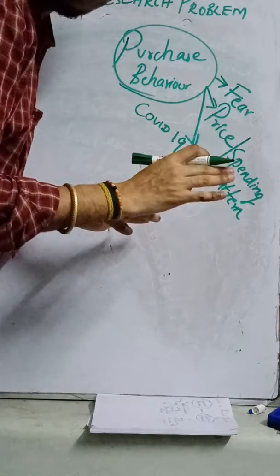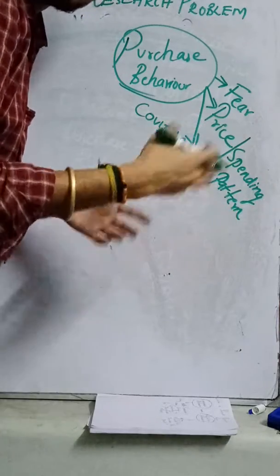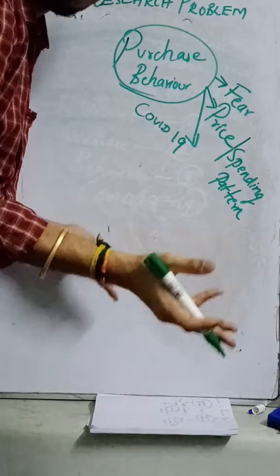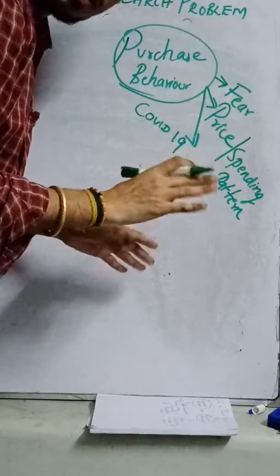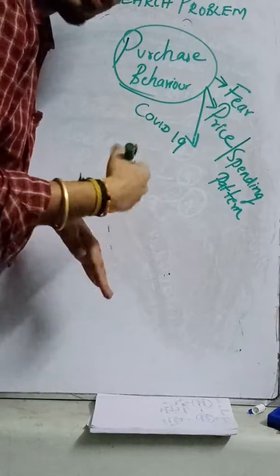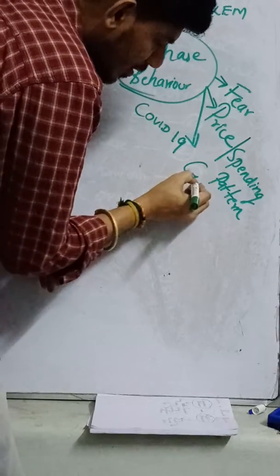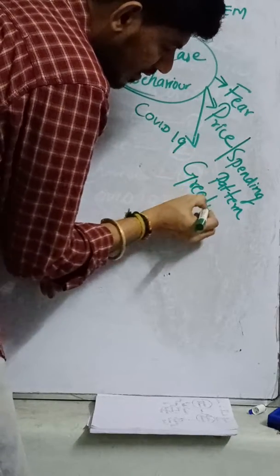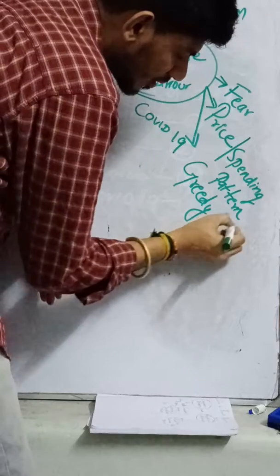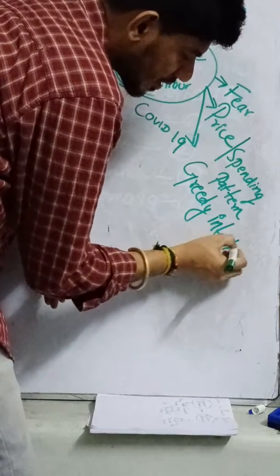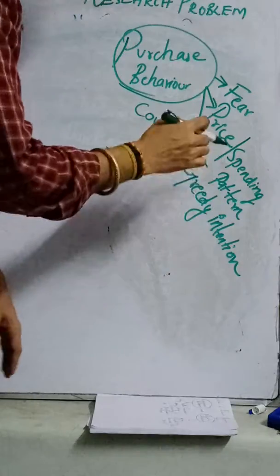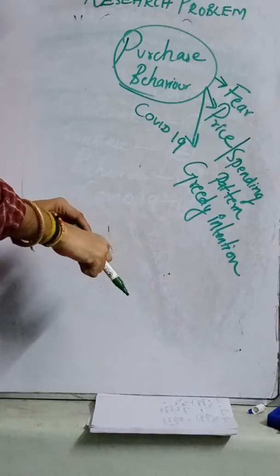Third one. I am not bothered about my friends or my relatives or other people who are near to my house, but I would ensure that I will get all the products and I would stock it for myself. Can I put it in this way? There is a greedy intention to purchase. That is also a problem.